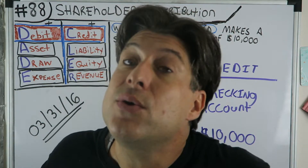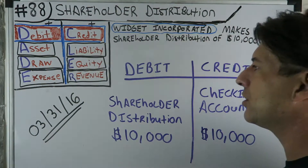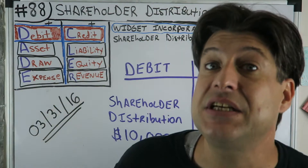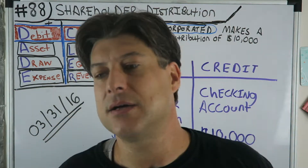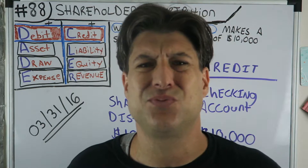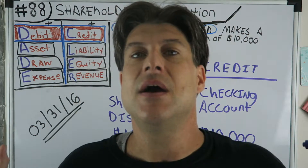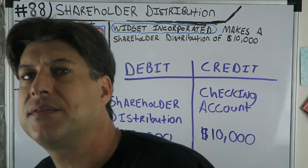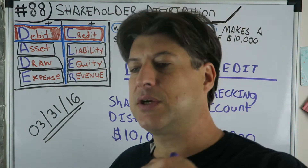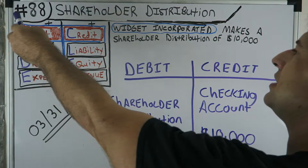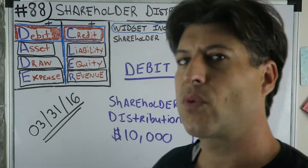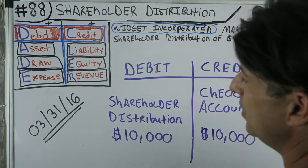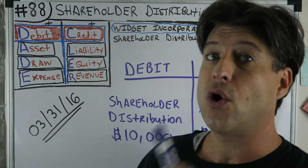What are we doing on number 88? We're going to do a shareholder distribution. We've done one before, but this is our series — Widget Inc. I want to say this is Widget Inc number 17. We started Widget Inc in 2015, we've done a journal entry for every single month, depreciation journal entries, a whole bunch of stuff. This is number 88 — shareholder distribution.